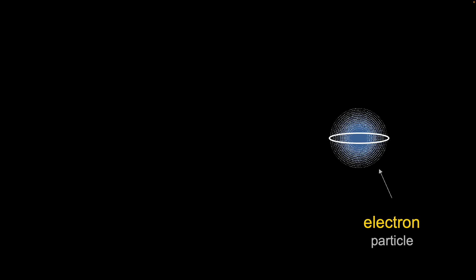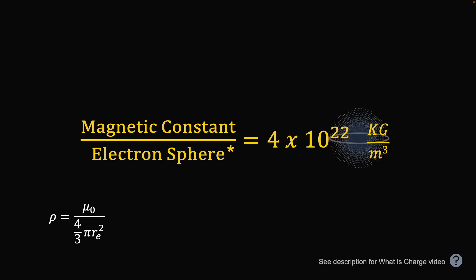The second method is going to use a particle, an electron sphere. And here's the picture again of electron as standing waves to a radius known as its classical radius. If you take the magnetic constant and divide it by a modified electron sphere, guess what? You get the same number again, 4 times 10 to the 22nd. Modified electron sphere, because you'll see it as 4 thirds pi r squared in the denominator, not cubed. And that's because the magnetic constant has the other distance in its denominator as linear density. But if you follow the link to the what is charged video in the description, it will cover the units of the magnetic constant. And when you apply that, you'll see it does resolve to units of density here, kilograms per meter cubed.